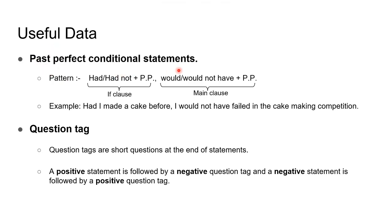A past perfect conditional statement has this kind of pattern: there is an if clause and a main clause, separated by a comma. The if clause starts with 'had' or 'had not' plus the past participle of a verb, and the main clause starts with 'would' or 'would not have' plus the past participle of an appropriate verb.